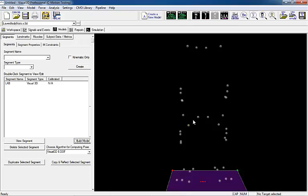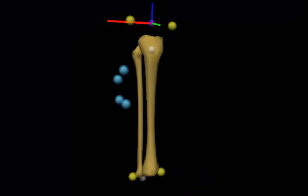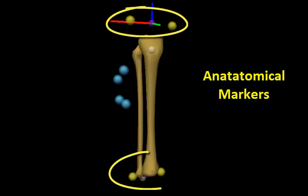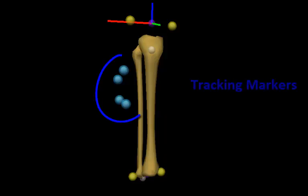When defining a model, it is important to note the difference between anatomical markers and tracking markers. Anatomical markers are placed at anatomically relevant locations such as bony landmarks near segment endpoints. These markers will be used to define the segment coordinate system. When defining the segments, they will be highlighted in yellow. Tracking markers are placed at convenient locations for tracking segments — generally locations that will not be obstructed during the subject's movement and have minimal tissue movement. When defining the segments, they will be highlighted in blue.